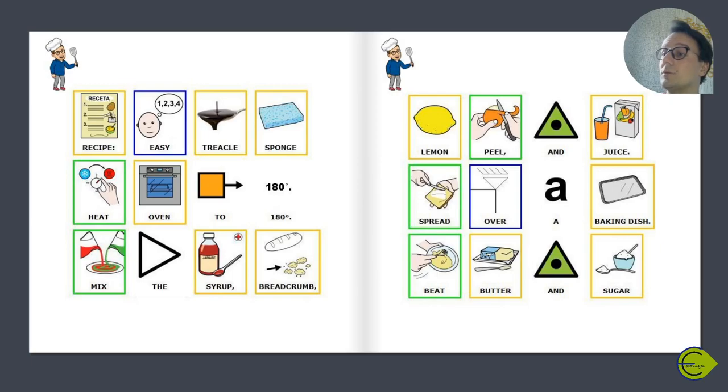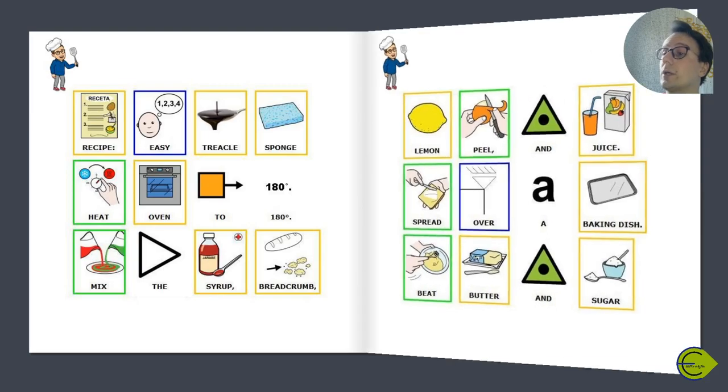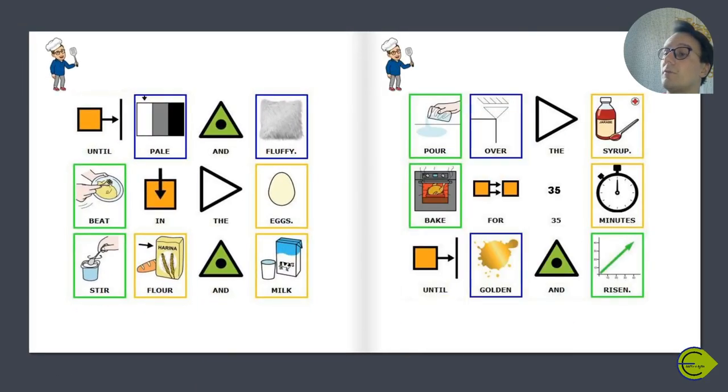Heat oven to 180 degrees. Mix the syrup, bread crumb, lemon peel and juice. Spread over a baking dish. Beat butter and sugar until pale and fluffy.